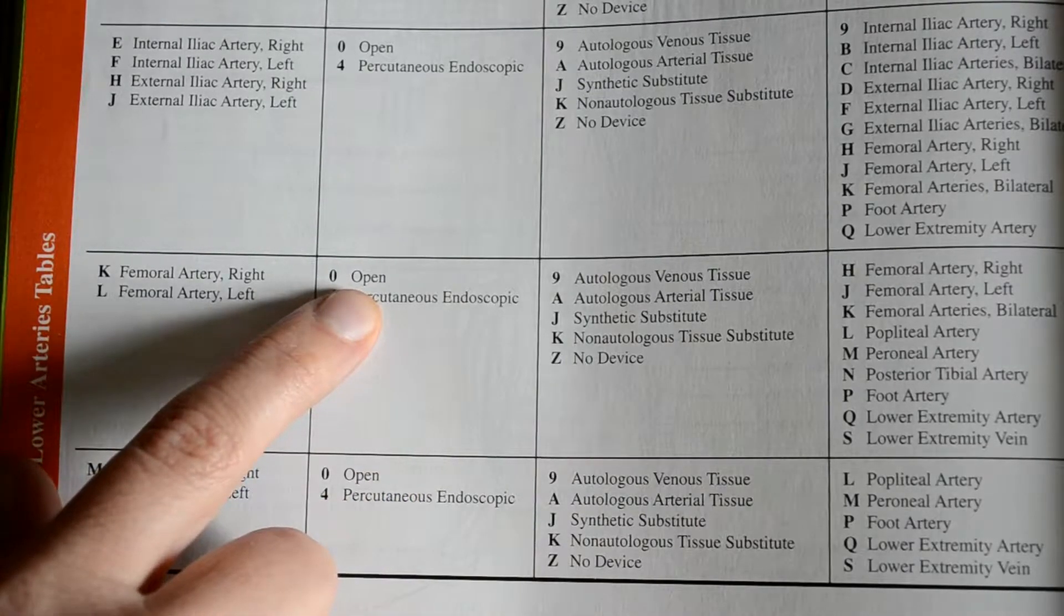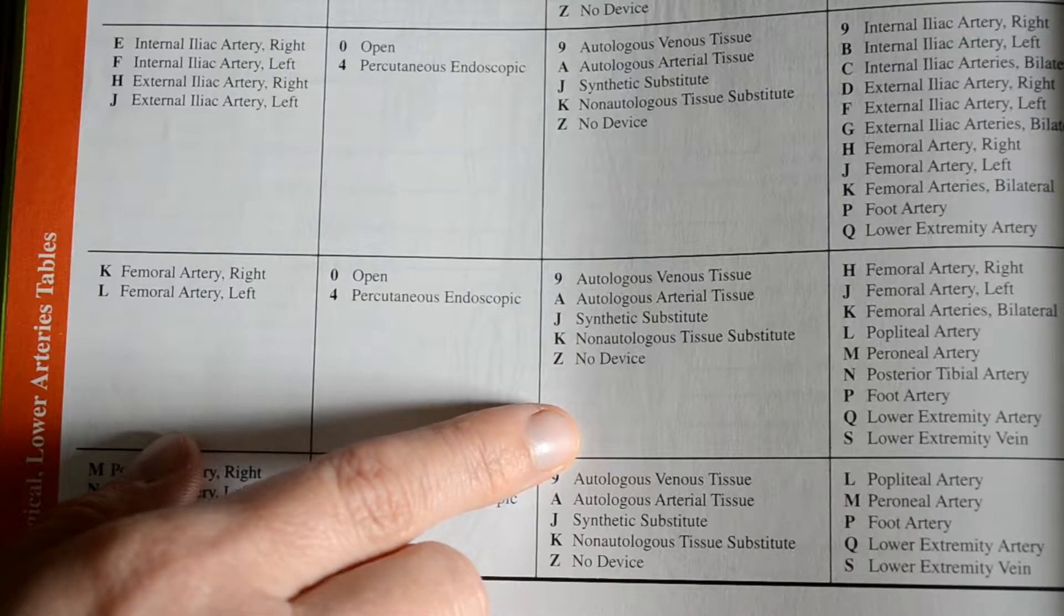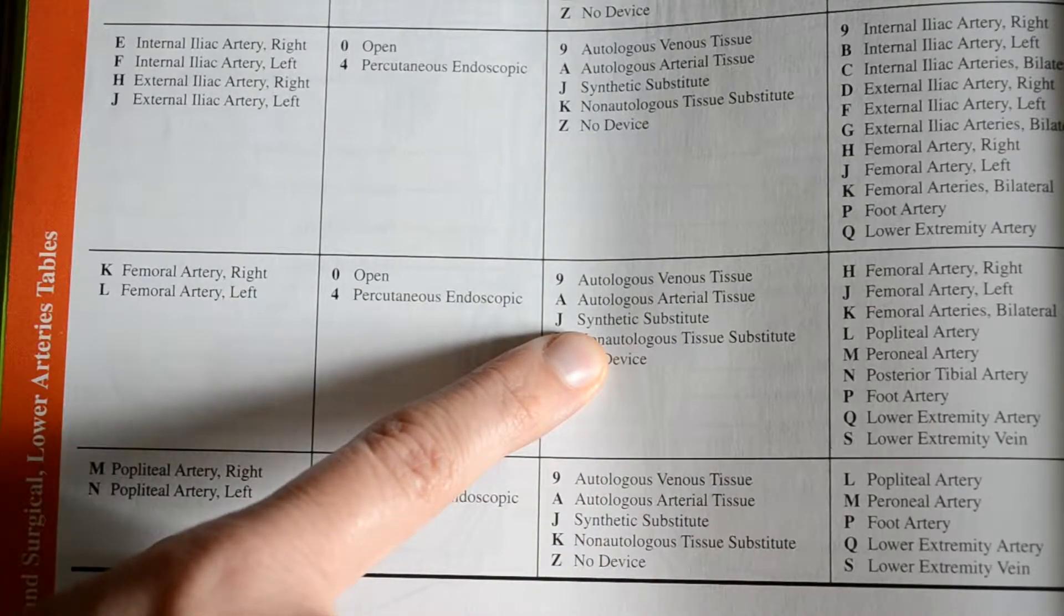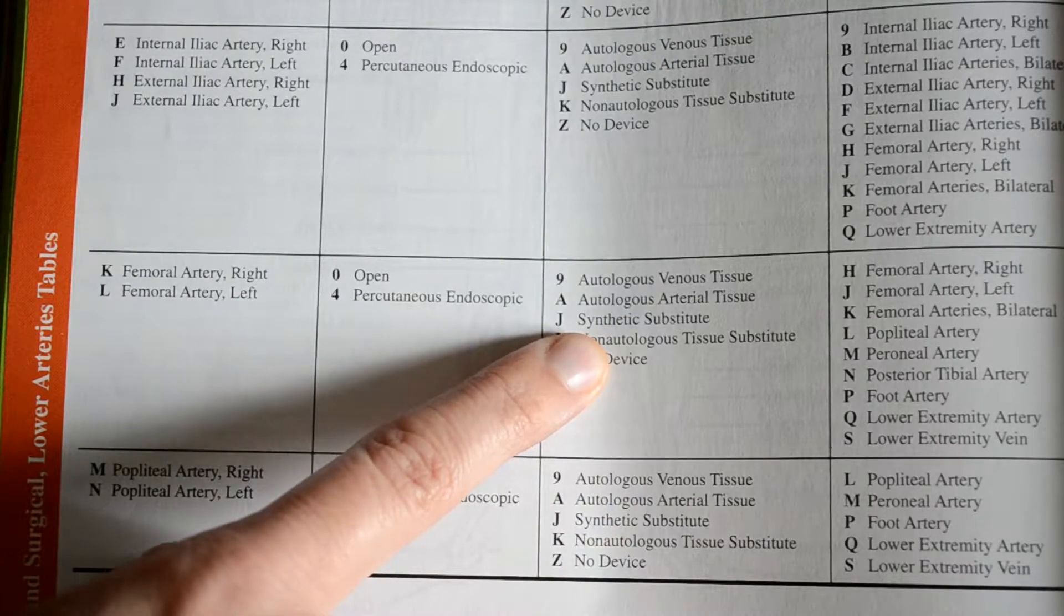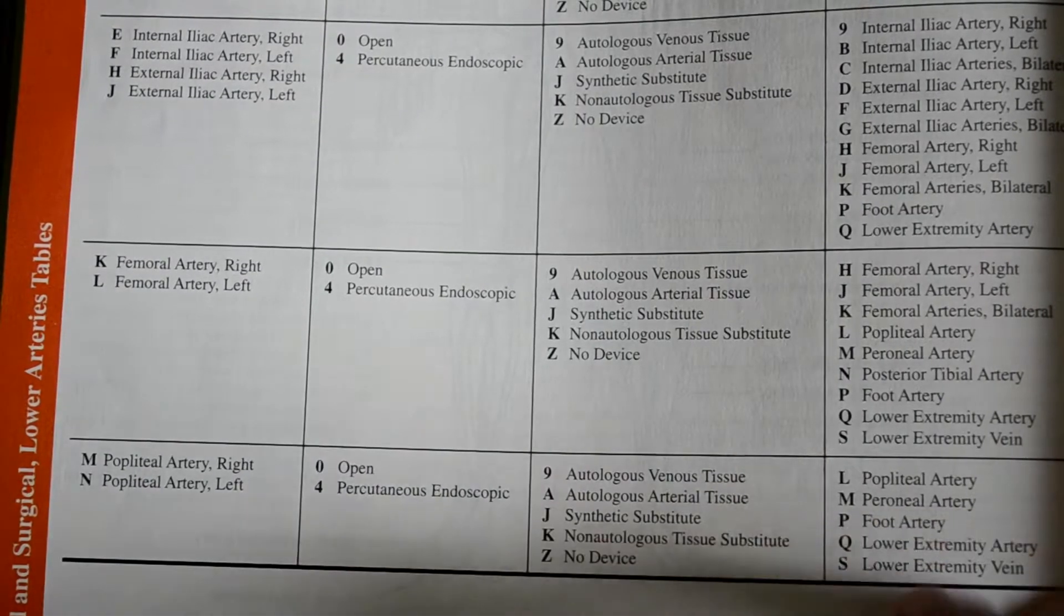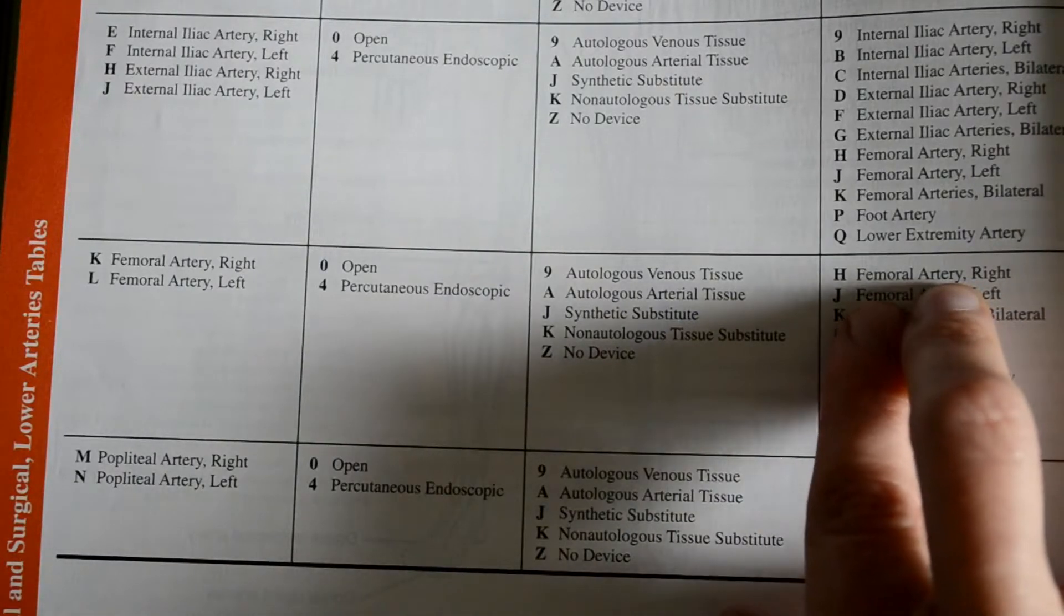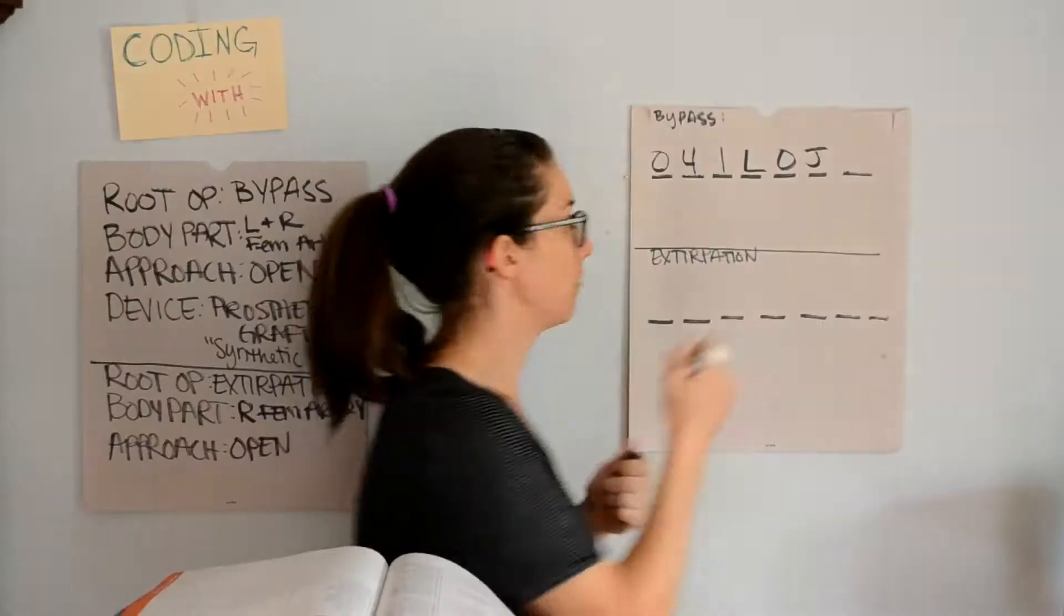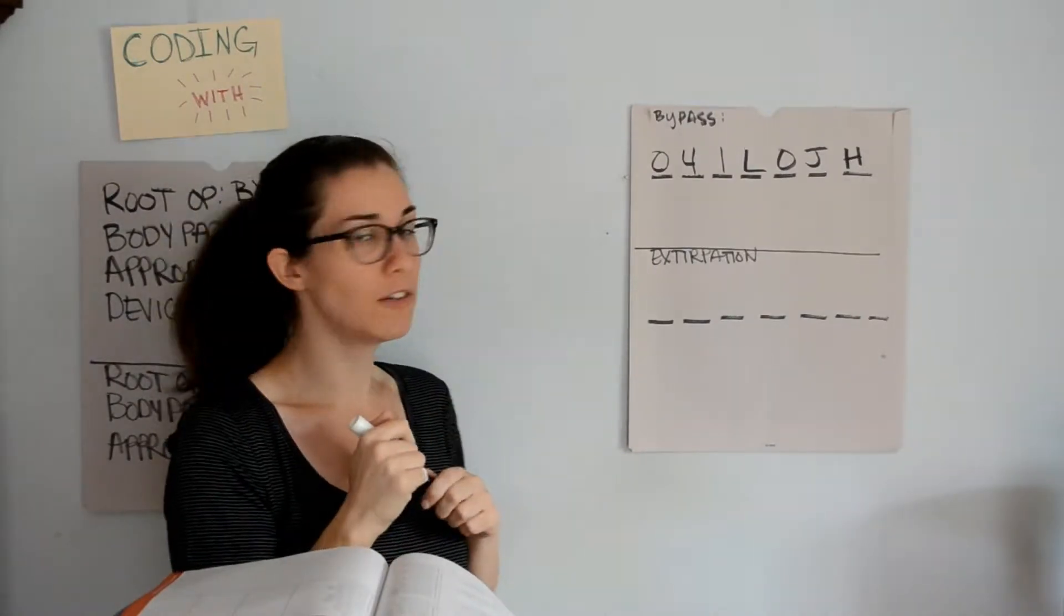And our device column, or our sixth character placement, we said that a prosthetic graft would be considered synthetic, so we want to choose synthetic substitute, so that's a J. And then our qualifier column, or our seventh character placement, we need to look for right femoral artery, because it was going from the left to the right. So, we want to look for femoral artery right, that is an H. And that is our first code, O-4-1-L-O-J-H.